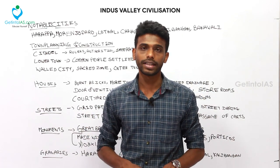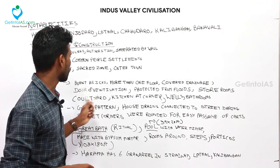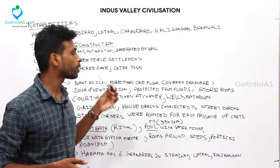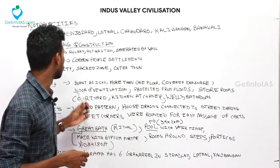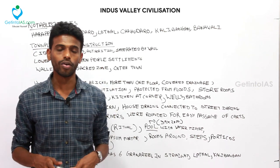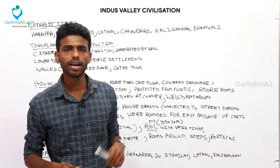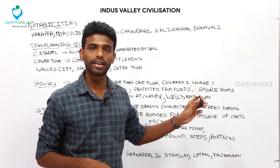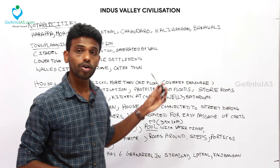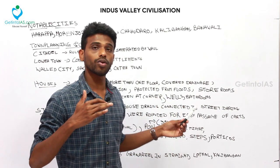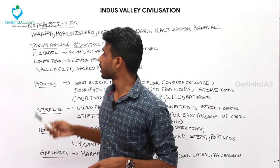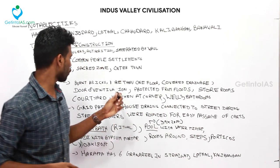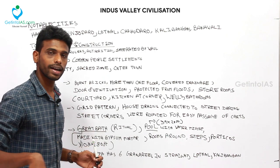Houses were constructed using burnt bricks, which gave greater strength to buildings. The houses had more than one floor, showing the vision of the people of that period. Houses had individual bathrooms with an underground drainage system connected to the street drainage — remarkable town planning for that era. There were also wells present in the houses. Houses were built at a height to protect from floods, and had store rooms, courtyards, and kitchens mostly at the corner.